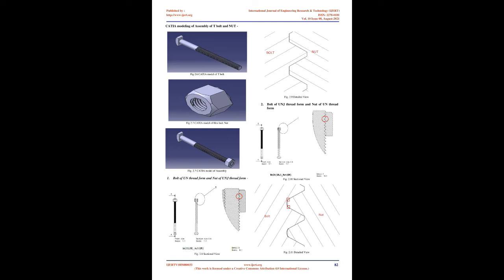ASTM testing methods include testing for various mechanical properties like tensile properties and hardness. It also gives the embrittlement testing method by using washer, hardened plate, and wedge. F1624 gives the threshold stress value of the steel by using the incremental step loading method. By keeping the stress value below the threshold stress value, embrittlement can be avoided.